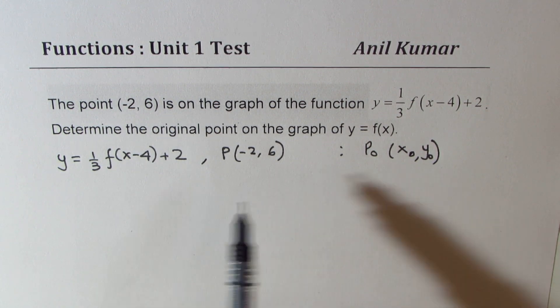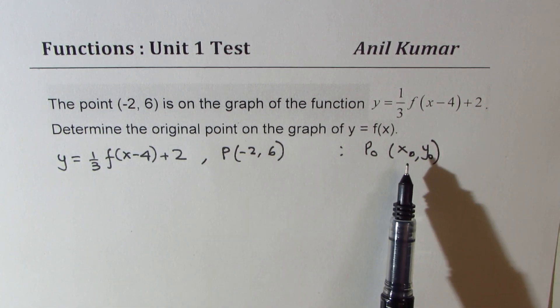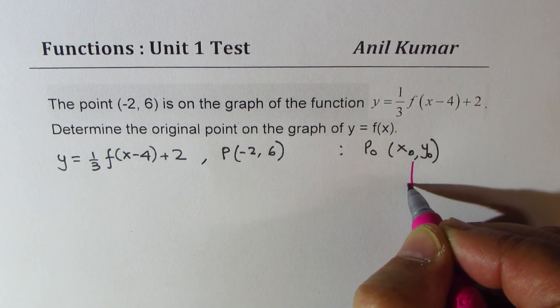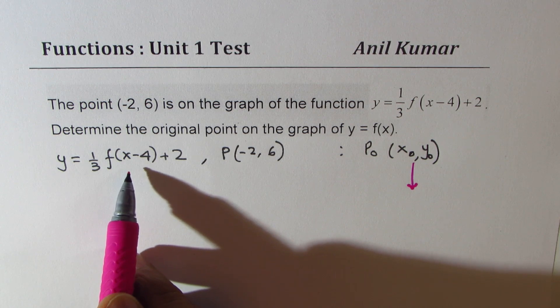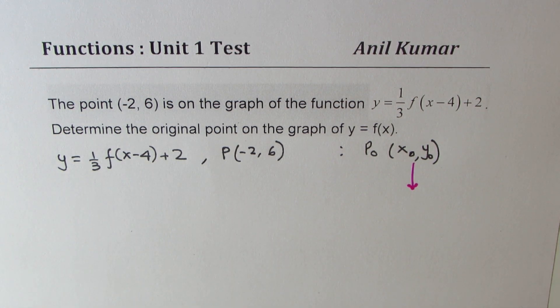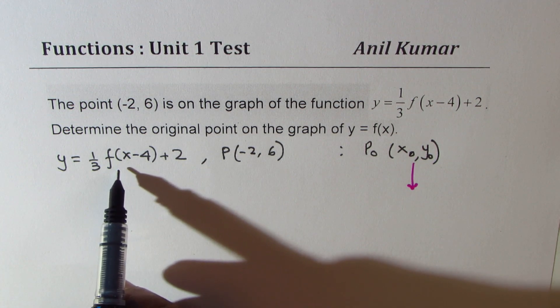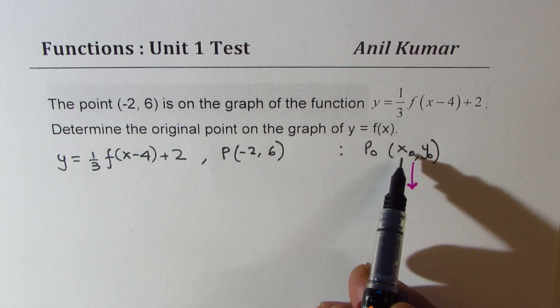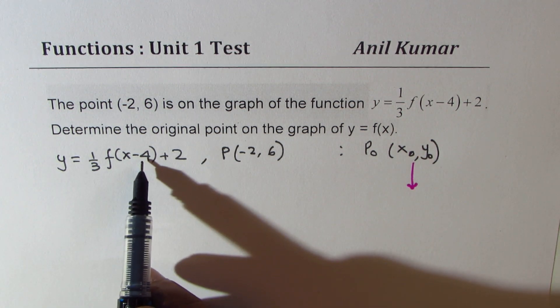Now think about the transformation. So if you start from (x₀, y₀) and look into the transformation, what is this transformation saying? It is saying that the transformed point should be—the x value is 4 units to the right, so the x value will increase by 4.